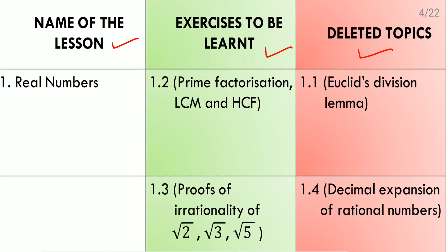First lesson: Real Numbers. Exercise 1.2 has prime factorization, LCM and HCF. Exercise 1.3 has proofs of irrationality of root 2, root 3, and root 5. These two exercises we need to learn. Exercise 1.1, which has Euclid's division lemma, is deleted. And exercise 1.4, which has decimal expansion of rational numbers, is also deleted.